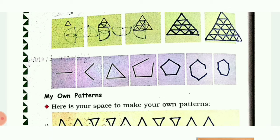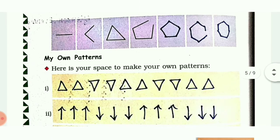The fourth one has four lines, the fifth has five lines, then six lines, then seven lines. In this way the lines keep increasing. My own pattern - here is your space to make your own patterns. You can draw whichever patterns you like.